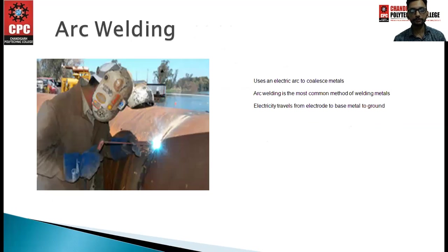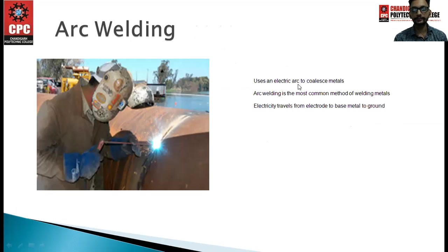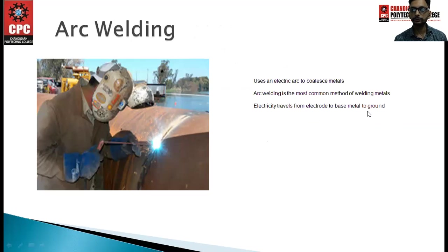Definition of arc welding: it uses an electric arc to coalesce metals. Arc welding is the most common method of welding metals. Electricity travels from electrode to base metal to ground.